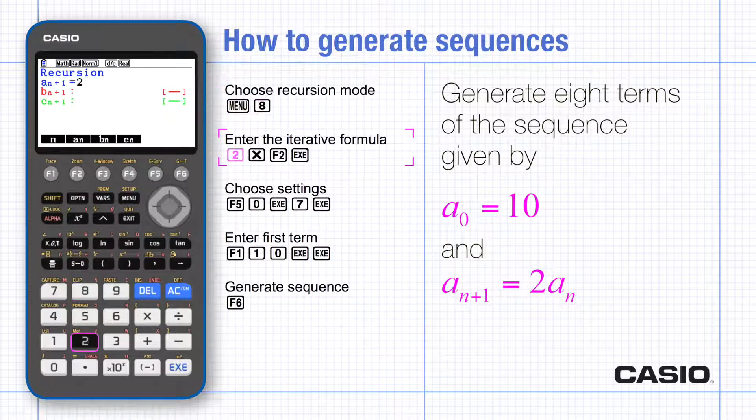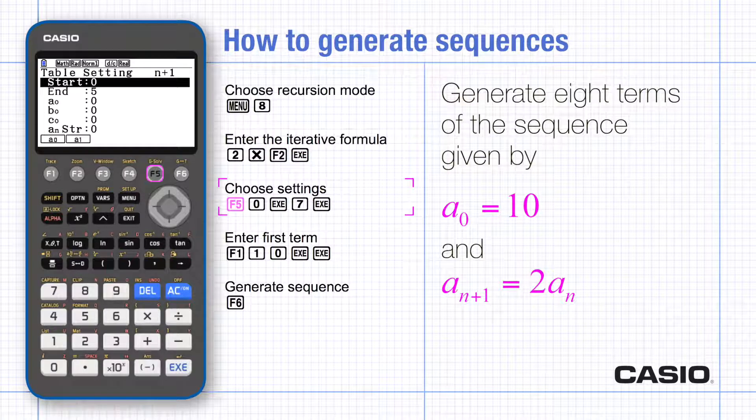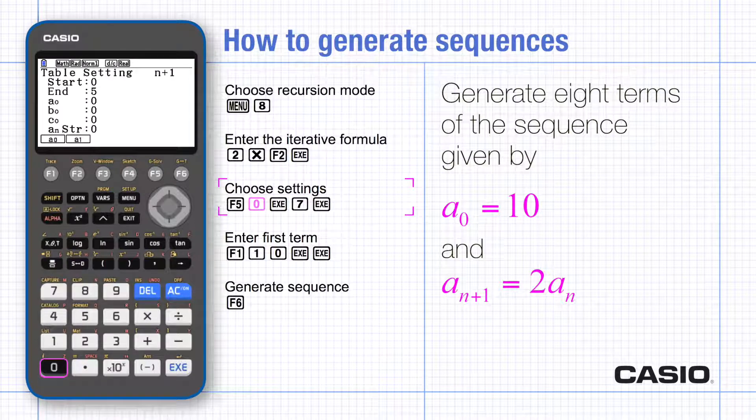As you start to type the formula, An appears to be used in the formula. We want the 1st to the 8th terms of the sequence.